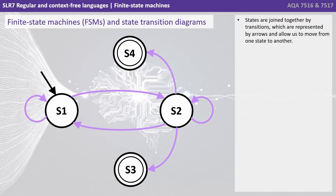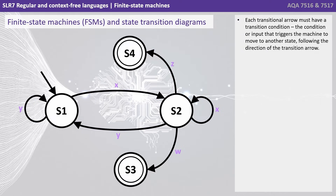States are joined together by transitions, which are represented by arrows and allow us to move from one state to another. Each transitional arrow must have a transition condition — the conditional input that triggers the machine to move to another state following the direction of the transition arrow.